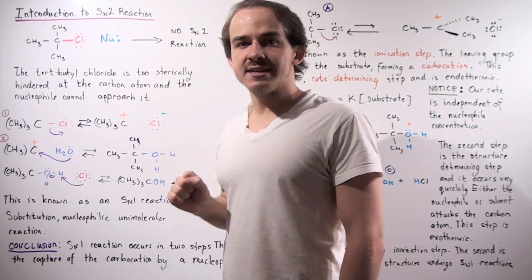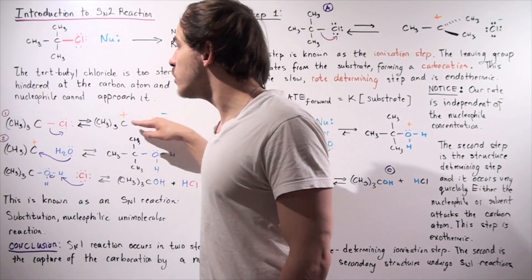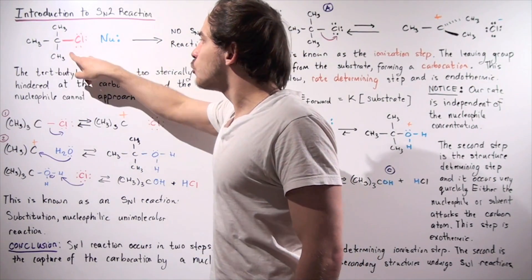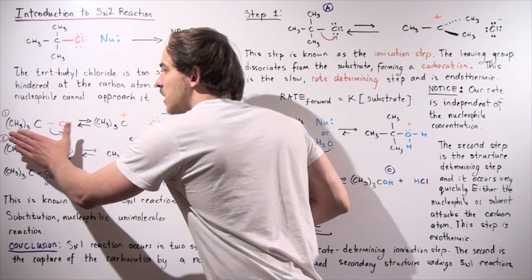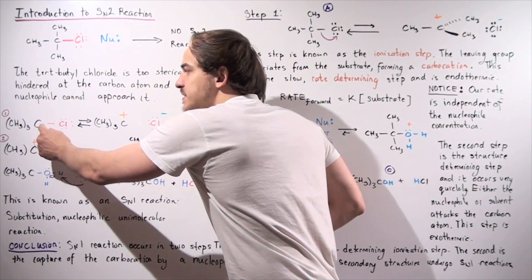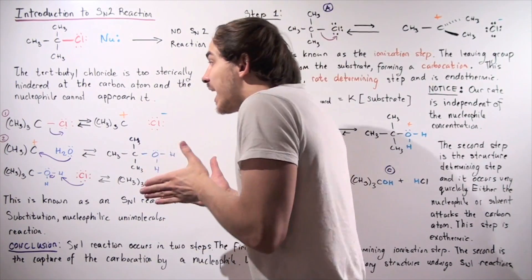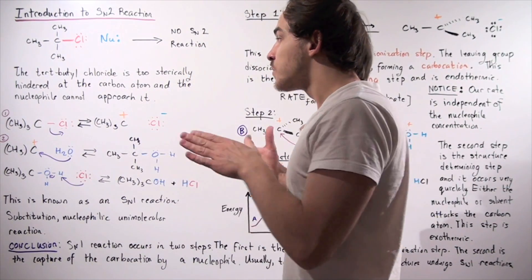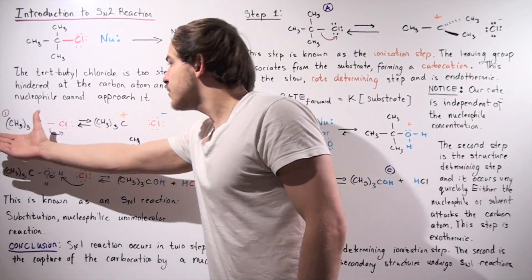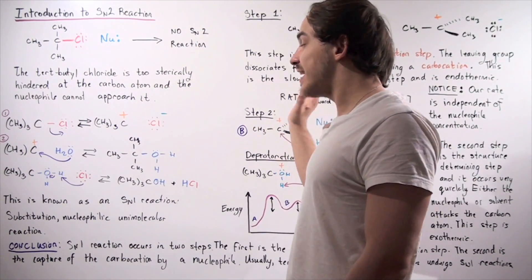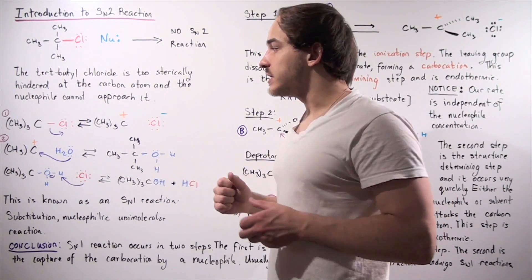On the other hand, an SN1 reaction will take place. In the first step, our leaving group detaches from our carbon. We have our substrate, tert-butyl chloride, and this bond breaks off by itself, forming two products. This bond breaks because our solvent stabilizes these products. So even though this reaction is endothermic, the products are still stabilized by our solvent — usually water.